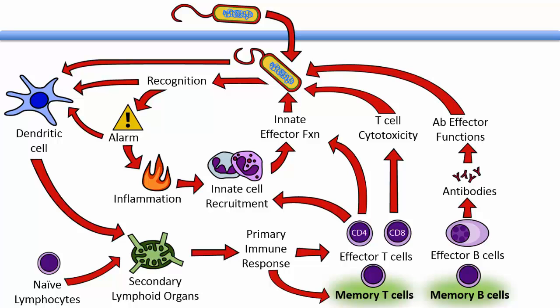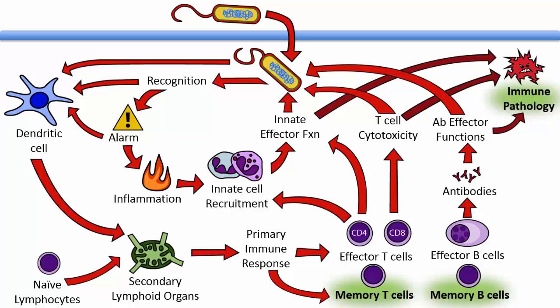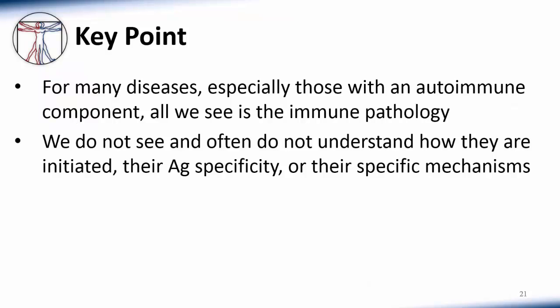Now the immune system is a powerful thing. Unfortunately, all of these toxic effector functions are not always confined to the pathogens — they can also injure our own tissues. This is known as immune pathology. A key point is that in many immune-mediated diseases, especially autoimmune diseases, all we see is the immune pathology. We do not see and often do not understand how they are initiated, their antigen specificity, or their specific mechanisms. This is true for a large number of very common diseases.